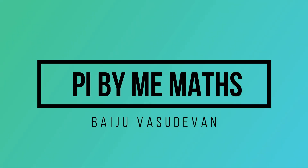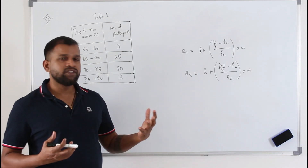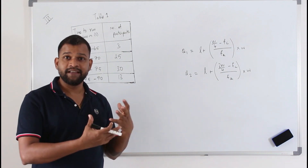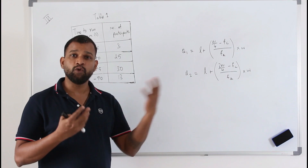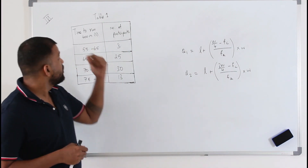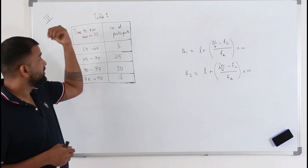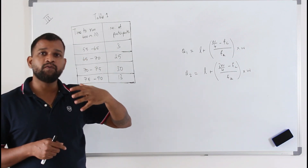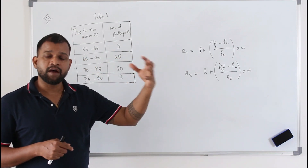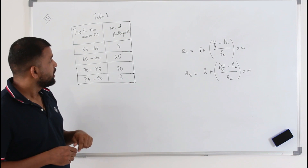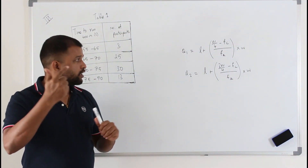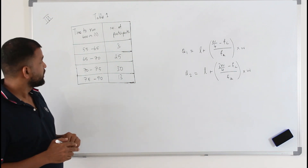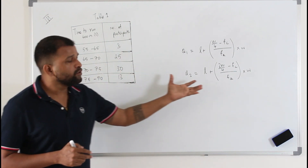Hi, welcome back to my channel Pi By Me Maths. This is Bhaiju Vasudevan. In this series we are learning about interpreting data — mean, median, mode, finding range, Q1, Q2, Q3. We looked at two types of data; this is a third type. We already learned how to find the mean, median, and mode. Now to find Q1 (lower quartile), Q2 (median), and Q3 (upper quartile), you can use a formula.